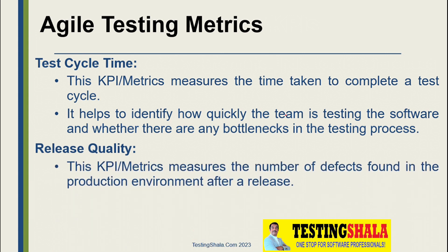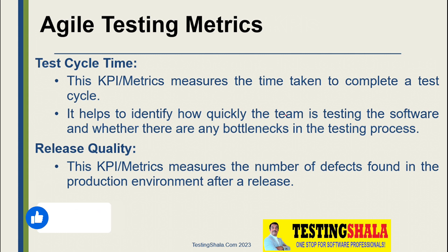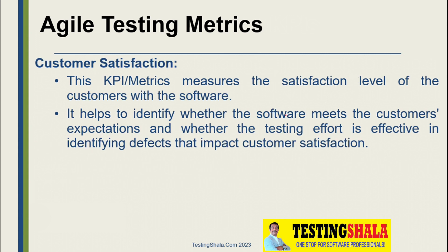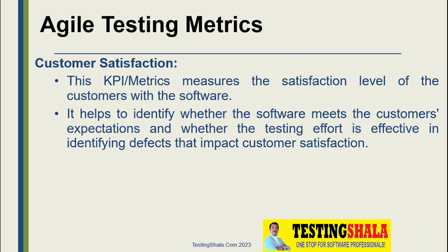Release quality is another important quality metric, measuring the number of defects found in production after a release. This is a key metric because defects that appear in production but were not found in our environment means we missed those defects in testing — indicating a lack of testing processes or validations. This metric helps us identify whether the software meets customer expectations, and poor release quality will impact overall customer satisfaction.